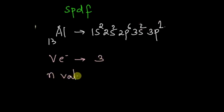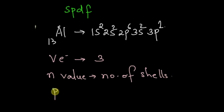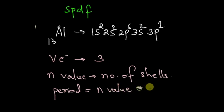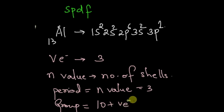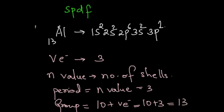The principal quantum number's value gives the number of shells, which gives us the period. So the n value gives the period value — in this case, period 3. For the group, we have 3 valence electrons, so it is 10 plus 3 which equals 13. Alternatively, aluminium is in the first group of the p block, which is also group 13.